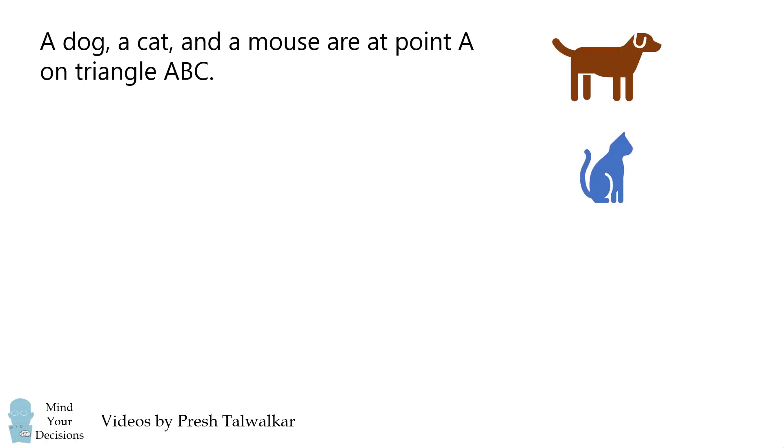A dog, a cat, and a mouse are at point A on triangle ABC.